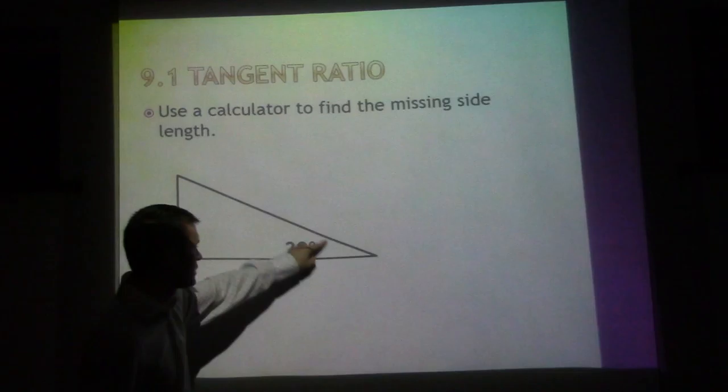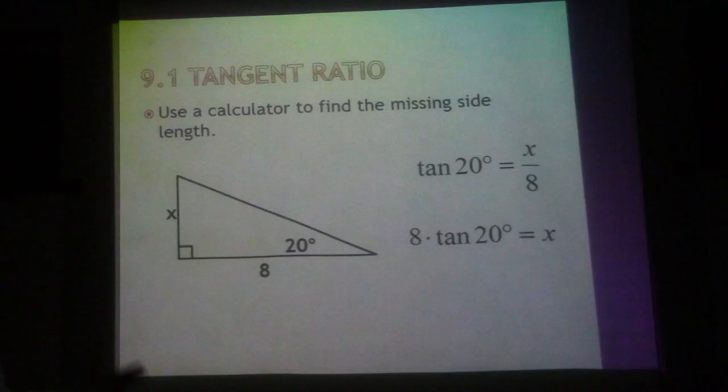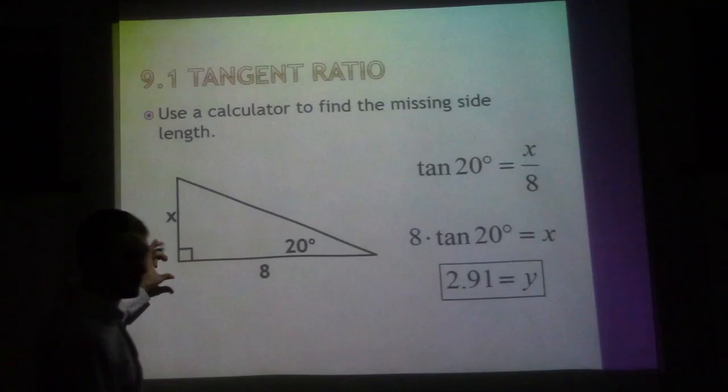Another one similar to it—we want to solve for X. Tangent of 20° equals X over 8. Do the same thing, multiply by 8, plug that into your calculator, and we get 2.91. This length is 2.91.